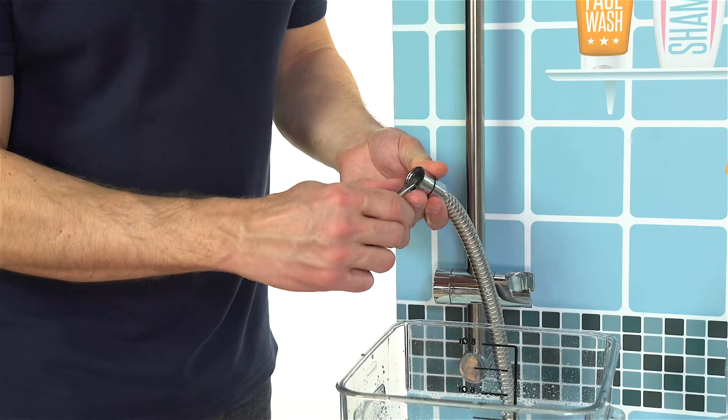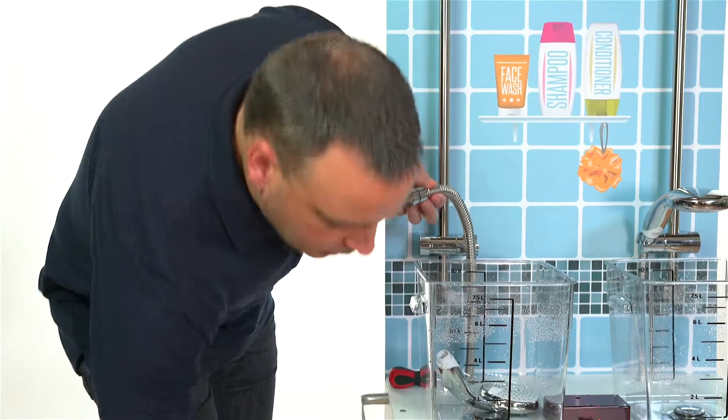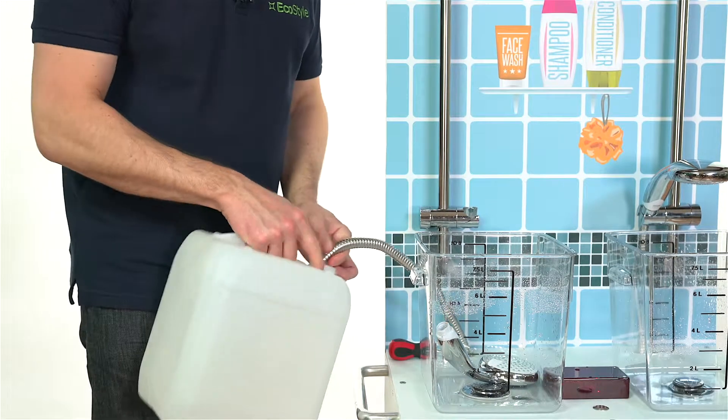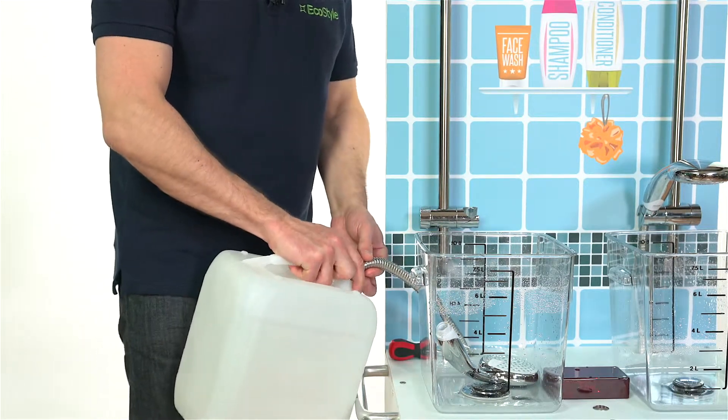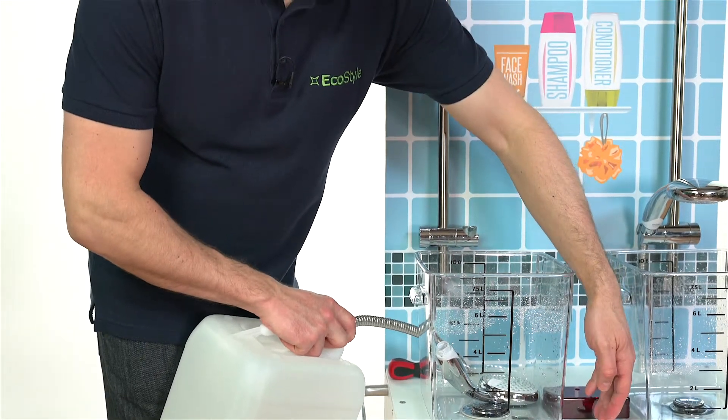Carefully remove the black rubber washer and place the hose into one of the jerry cans. Then run the power to pump the water into the jerry can.